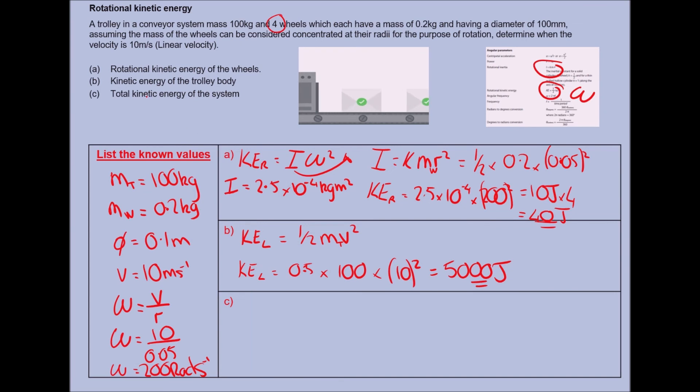Last but not least, we're going to find the total kinetic energy. KE total, so we know what's what. We're simply going to add the rotational kinetic energy to the linear kinetic energy to give us the total kinetic energy. So we'll get 40 plus 5000, which equals 5040 joules, or 5.04 times 10 to the 3 joules.